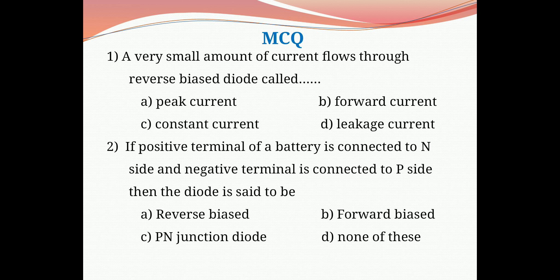Now we solve MCQs on these topics. Question 1: A very small amount of current flows through the reverse bias diode. It is called — Option A: peak current, Option B: forward current, Option C: constant current, Option D: leakage current. As discussed, in reverse bias PN junction diode a very small amount of current flows due to minority charge carriers, and that current is called leakage current. Therefore the correct answer is D, leakage current.